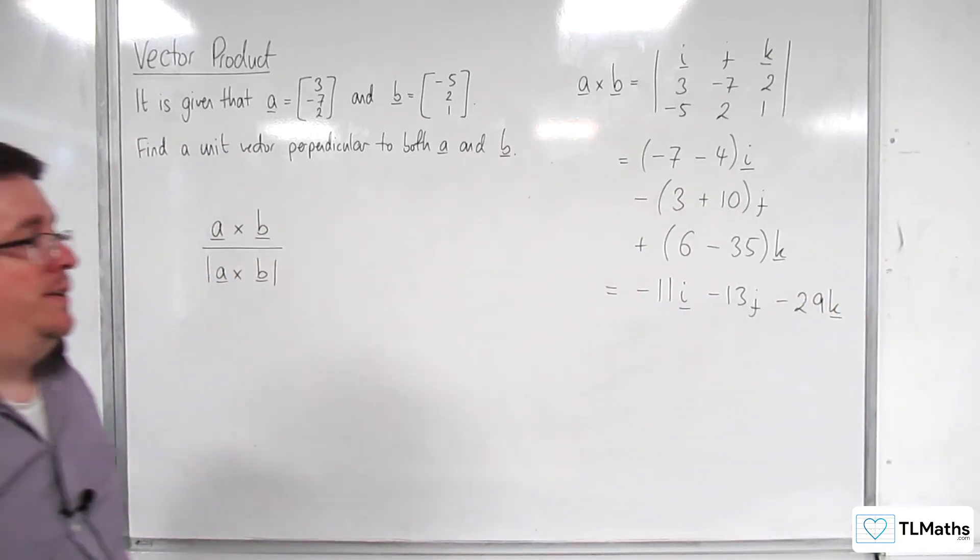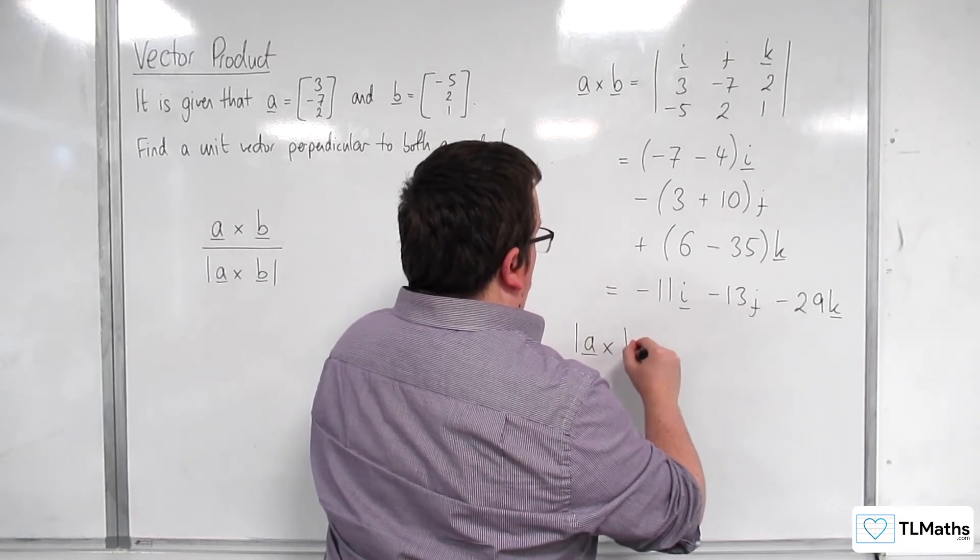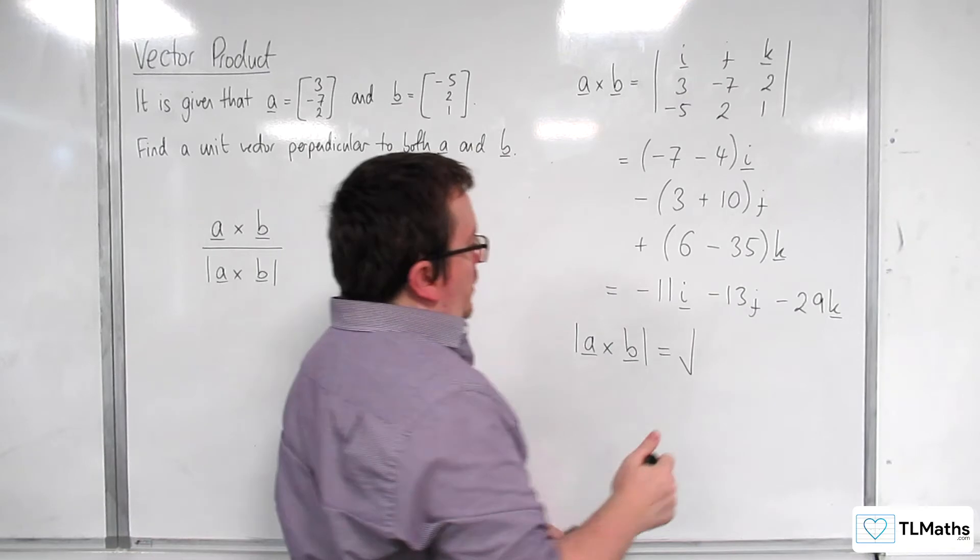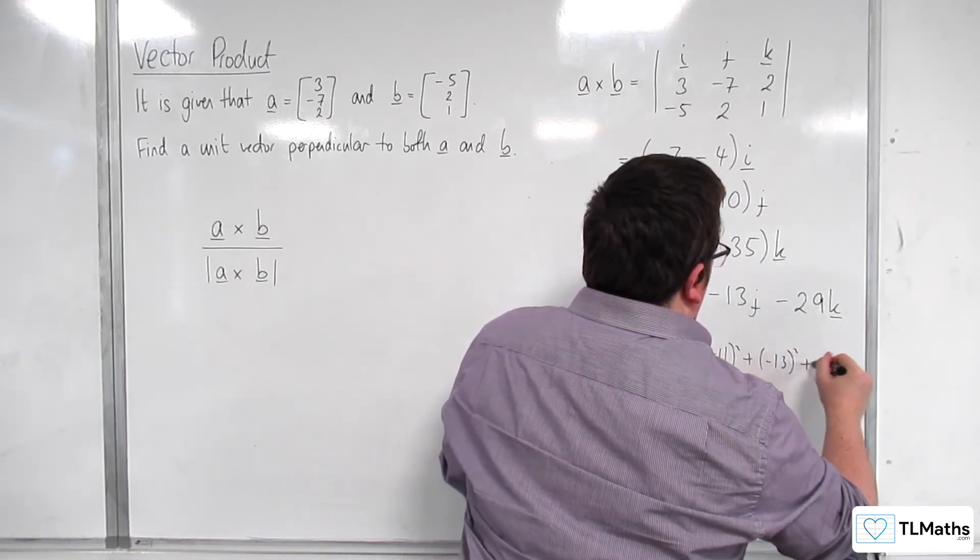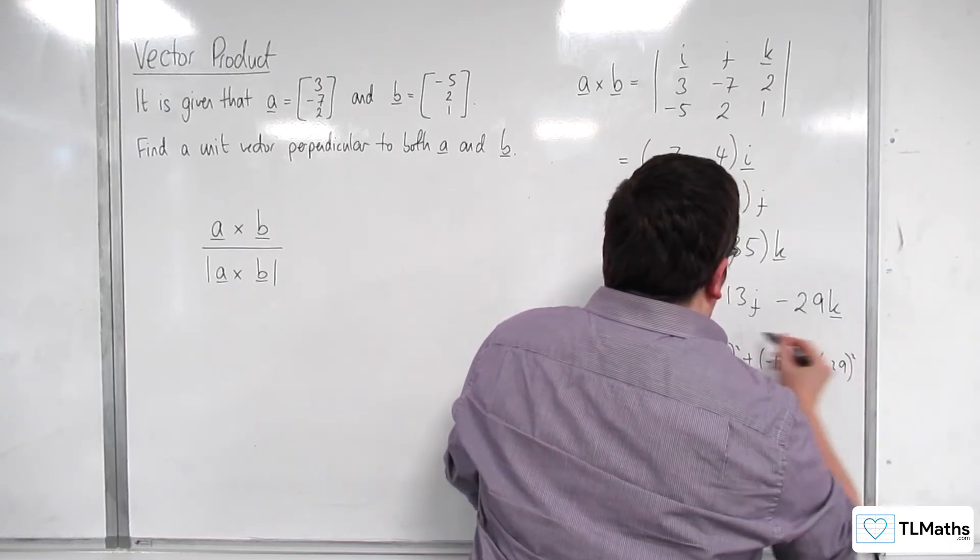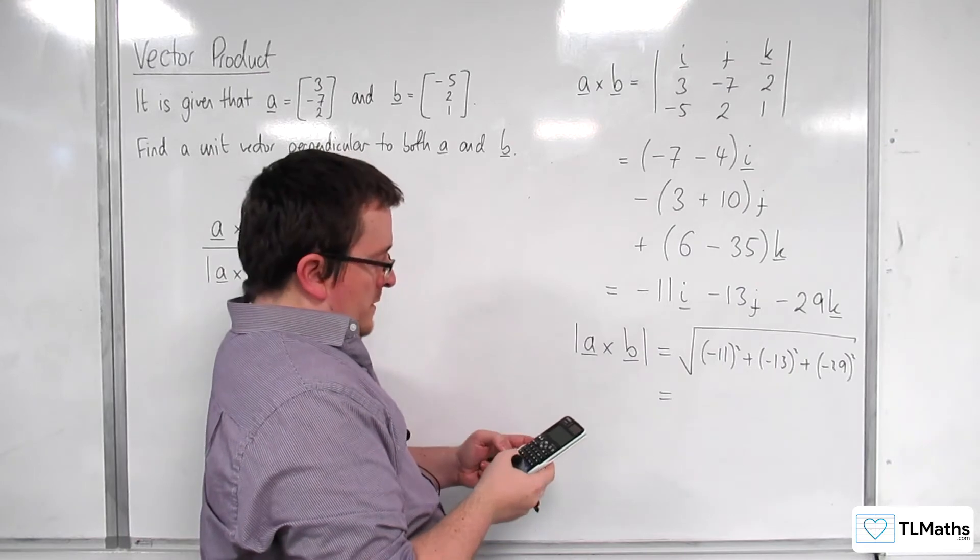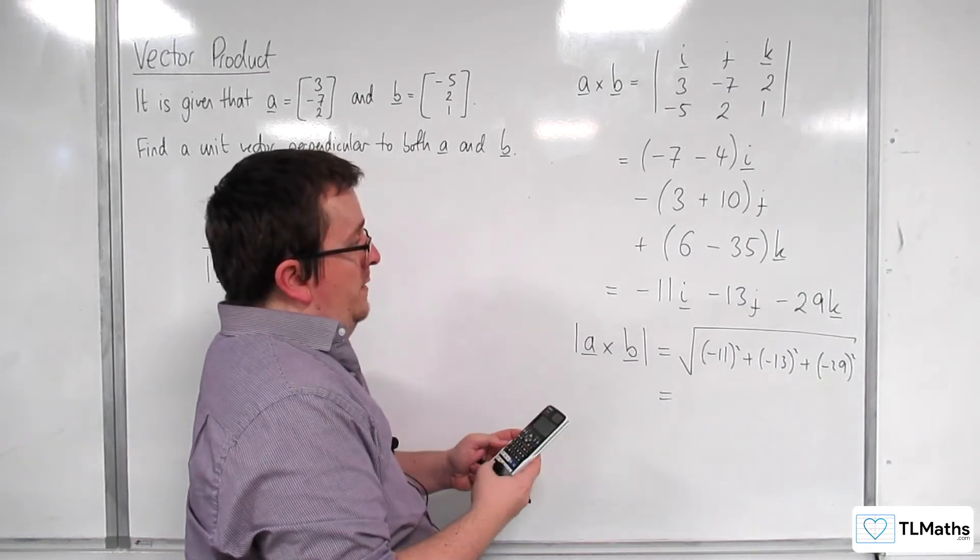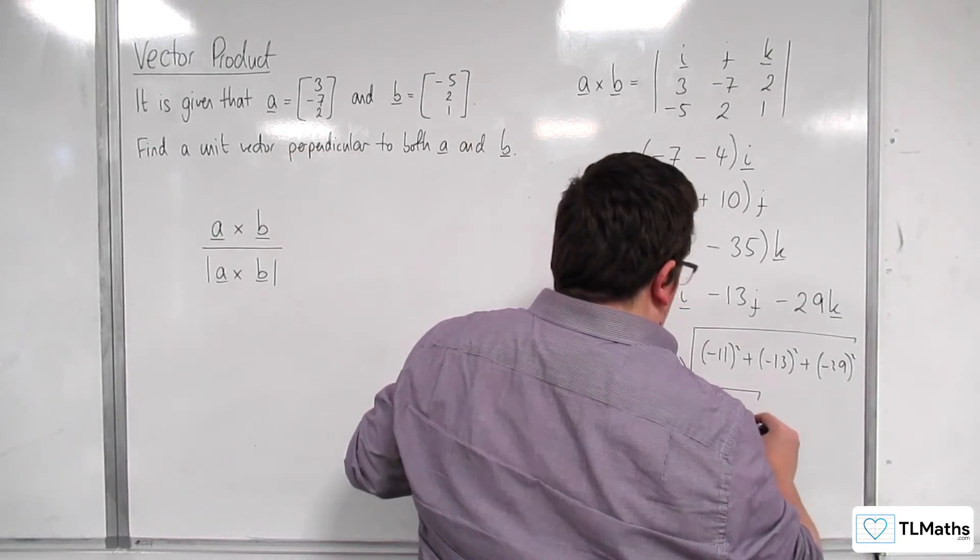Now we're also going to need the length of this vector, so the length of a cross b is going to be equal to the square root of -11 squared plus -13 squared plus -29 squared. So 11 squared plus 13 squared plus 29 squared is the square root of 1131.